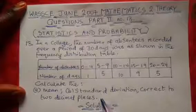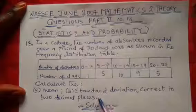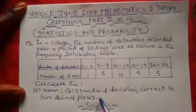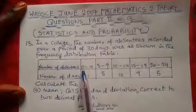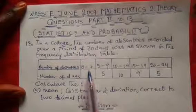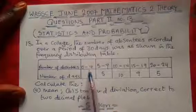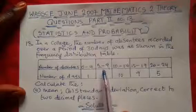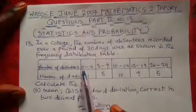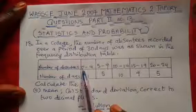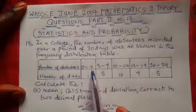This is a case of statistics. The first thing we note is that we are dealing with grouped data. Whenever you see numbers like this, they are called grouped data. This first number is the lower class interval, while this other one is the upper class interval.